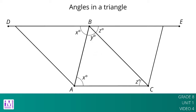A 180-degree rotation of triangle ABC around the midpoint of BC interchanges angles C and CBE, so they have the same measure. In the picture, these angles are marked as Z degrees.